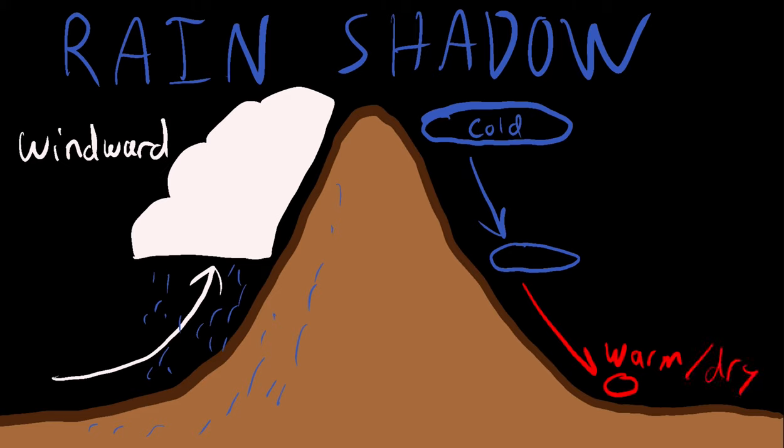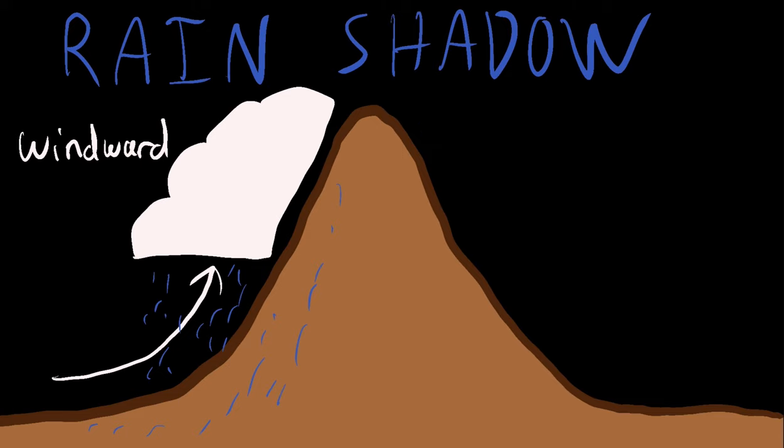So you might understand why it's warm, but now you might be wondering why it's dry. So the reason it's dry is because, well, simple enough, we squeezed out all the water on the other side. You can almost think of this as a sponge. That sponge was rising up the left side of the mountain and then we squeezed out the water. And then as the sponge goes down the right side of the mountain, it's just dry.